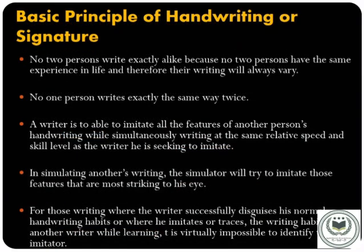Let's understand the basic principles of handwriting and signature. No two skilled writers exhibit identical signature features. Every person has a range of natural variation in their signature. No two writers can exceed their own skill level — for example, it would not be possible for a marginally literate person who has only learned basic hand-printed letters to execute perfectly formed, highly skilled cursive writing.